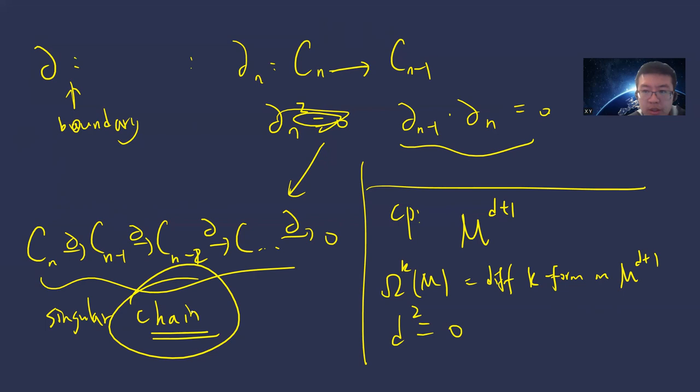In mathematics, when someone says 'chain,' the indices are decreasing. So a chain complex has maps between modules with decreasing indices, satisfying the composition equals zero condition. One can also define a cochain, which is simply the same idea but with indices increasing.